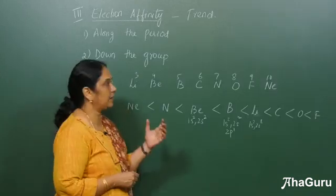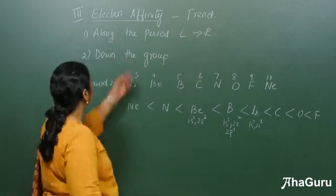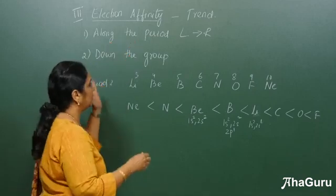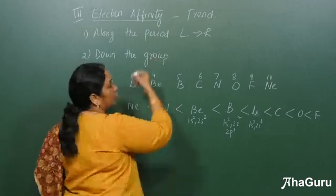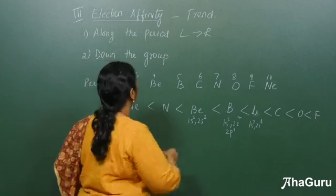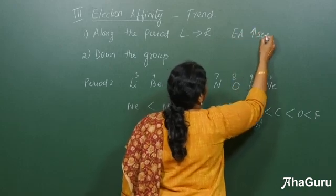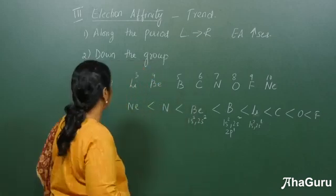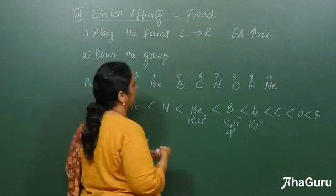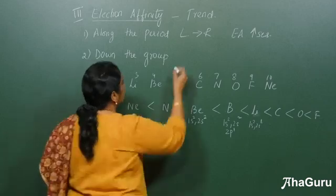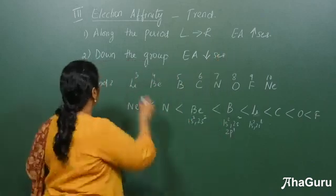Now let us see the trend along the period from left to right, and down the group from top to bottom. Across a period, the effective nuclear charge increases, so the atom can take up an electron more easily — electron affinity increases across a period. Down the group, there is more electron-electron repulsion, so the atom cannot take up the electron as easily — electron affinity decreases down the group.